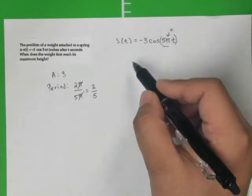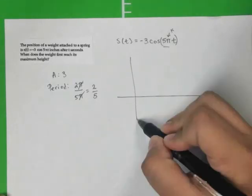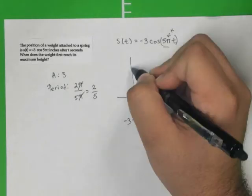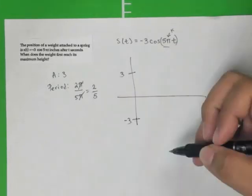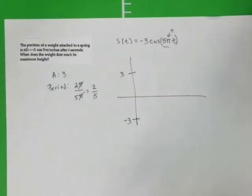All right, now let's go ahead, and I'm just going to sketch this graph here, and it's going to be between negative 3 and 3 units, okay? That's represented by the height.